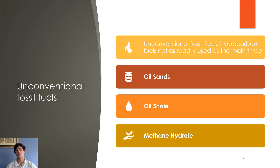Now that we've covered the three major conventional fossil fuels, we're going to go over unconventional fossil fuels. Unconventional fossil fuels simply refer to hydrocarbon fuels which are not as readily used as the major three — coal, oil, and natural gas. These include oil sands, oil shale, and methane hydrate, all of which we're going to go over.